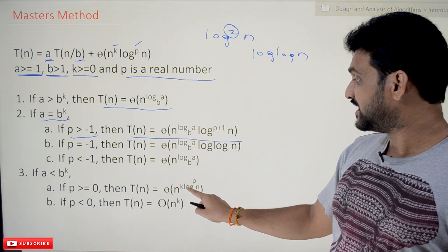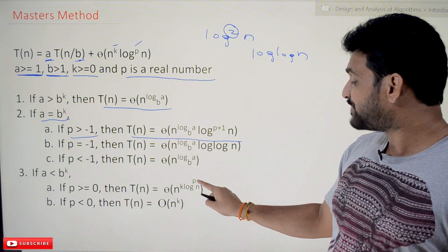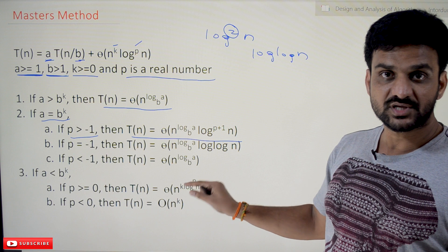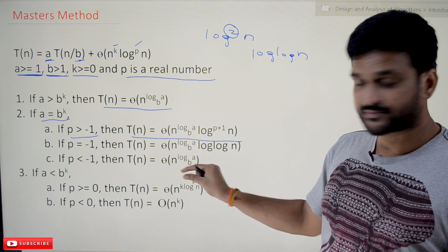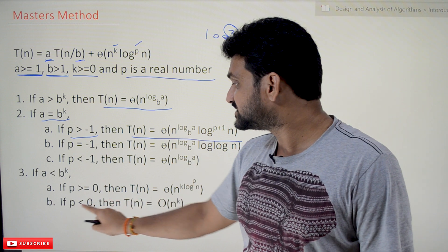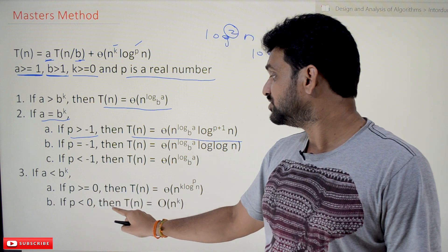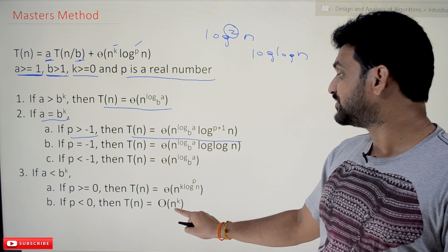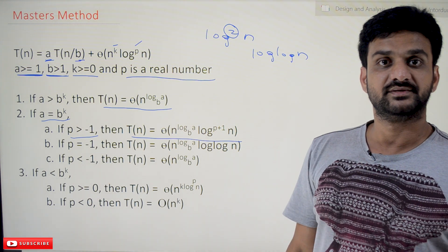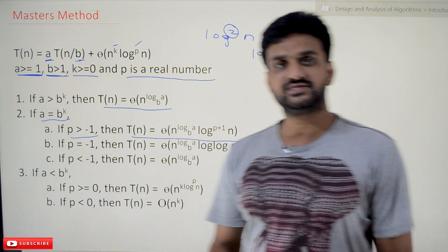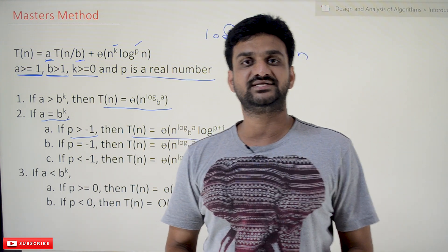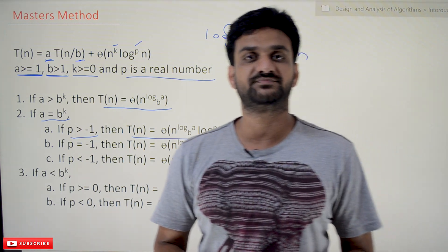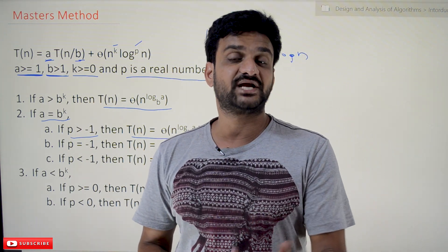Continuing with the case a equals b^k: the result is Θ(n^k · log^p n). And if p is less than 0, then T(n) is equal to O(n^k). So this is all about the Master's Theorem. Hope you got clarity on this concept. Thanks for watching.